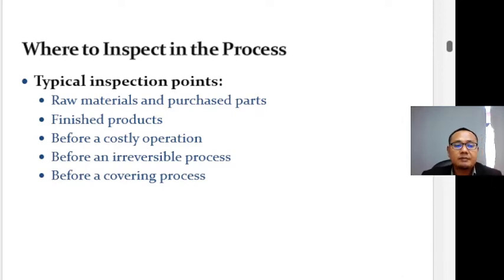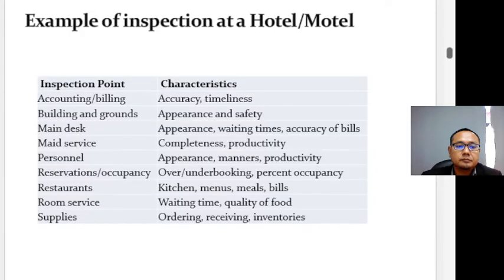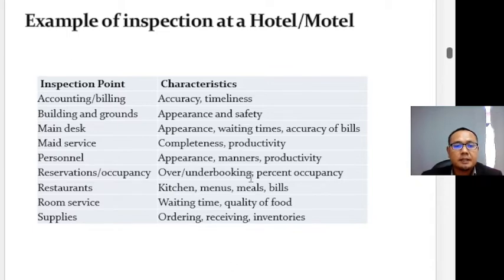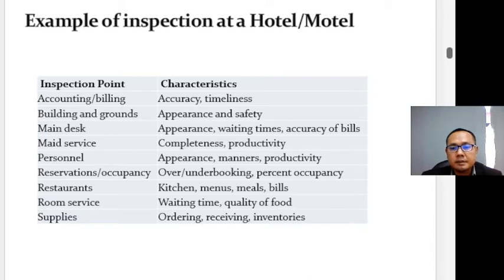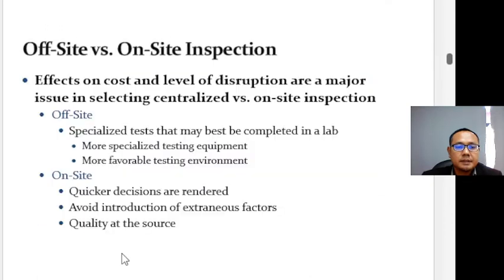Inspection should also occur before covering processes like painting or plating. There are examples of inspection at hotels or motels — with inspection points and characteristics such as accounting focused on accuracy, and buildings and grounds evaluated for appearance and safety.